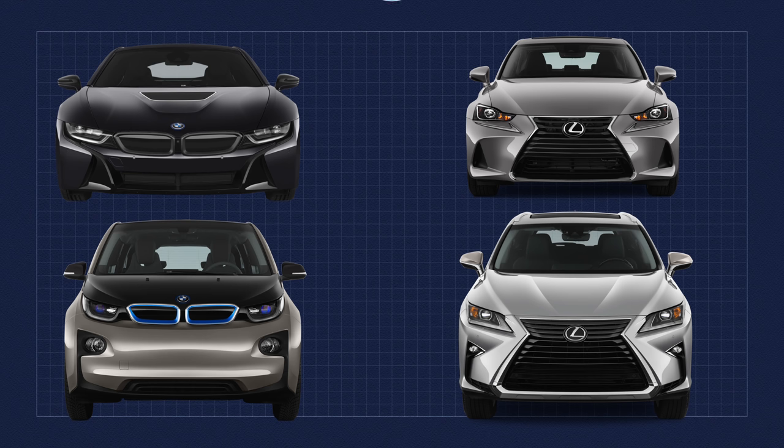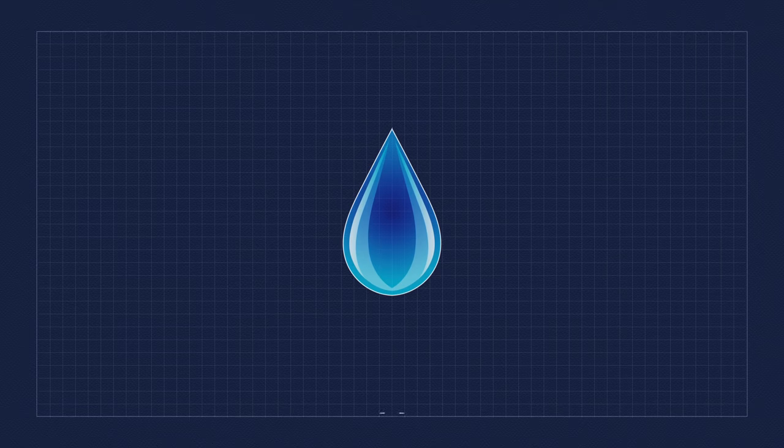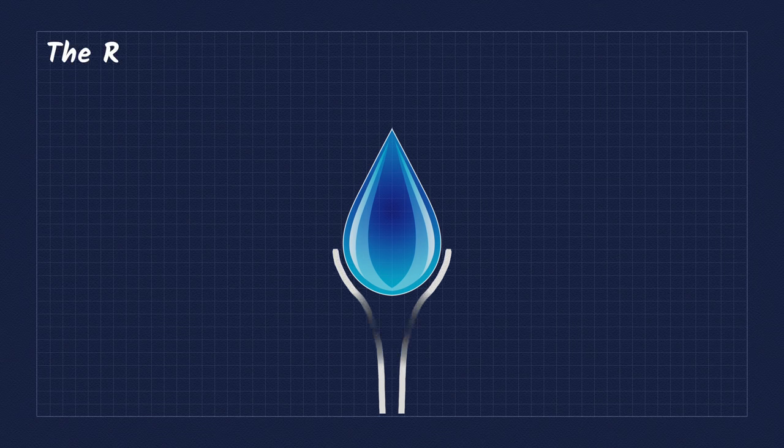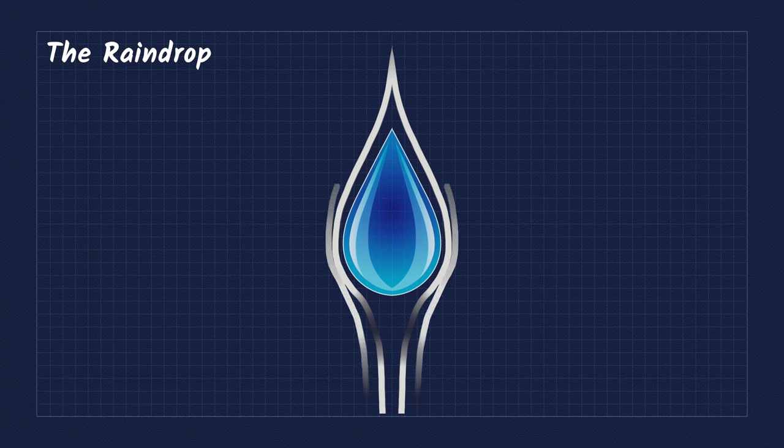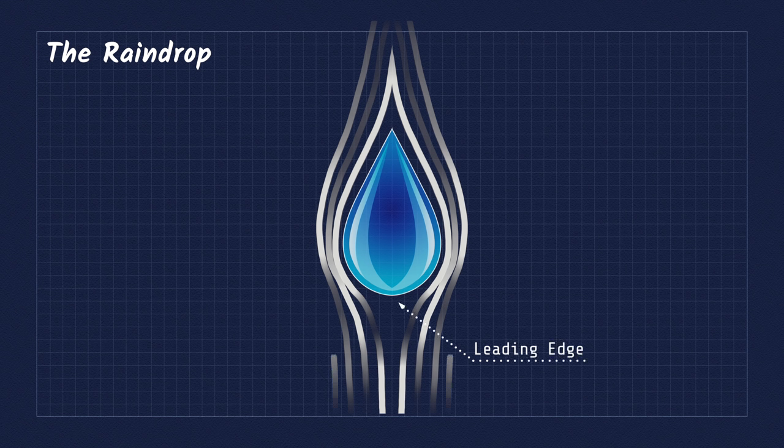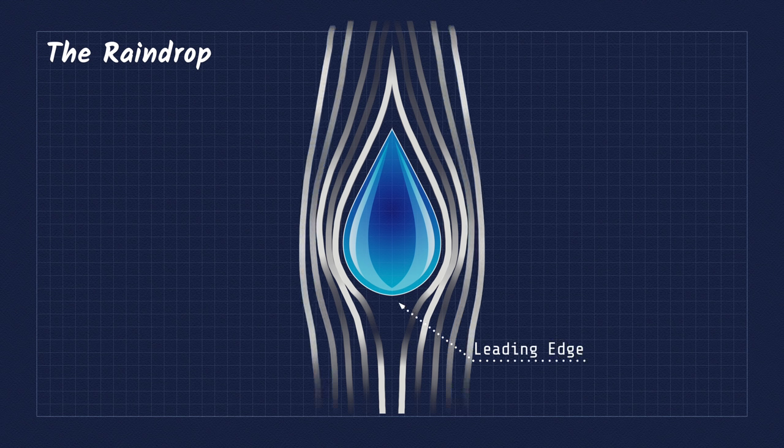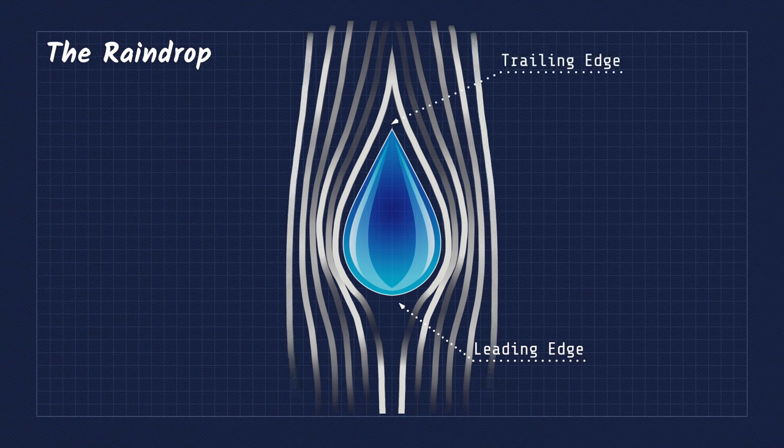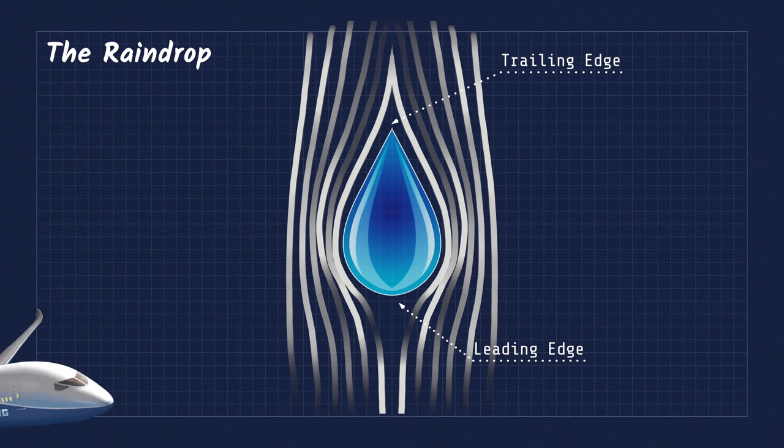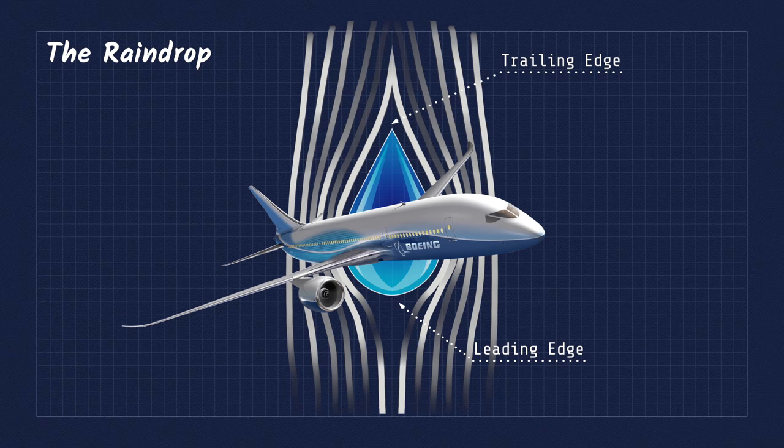To understand the ideal aerodynamic design, we need look no further than Mother Nature. The raindrop pulled by gravity fighting air resistance naturally takes the form of the perfect aerodynamic shape. The leading edge is rounded to shed air in every direction with minimal flat spots causing stagnation. The trailing edge tapers to a near point allowing all the redirected air to stay connected as it travels and ultimately converge at the end. This explains why all commercial airplanes look more or less the same.